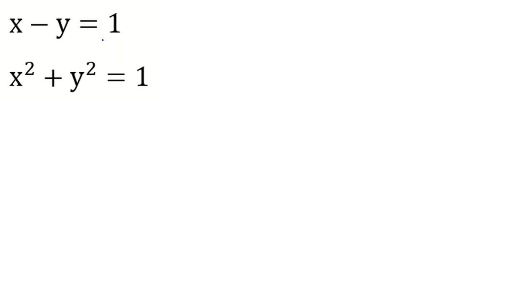We have the system: x minus y equals 1, and x squared plus y squared equals 1. We want to find x and y, where both are real numbers.